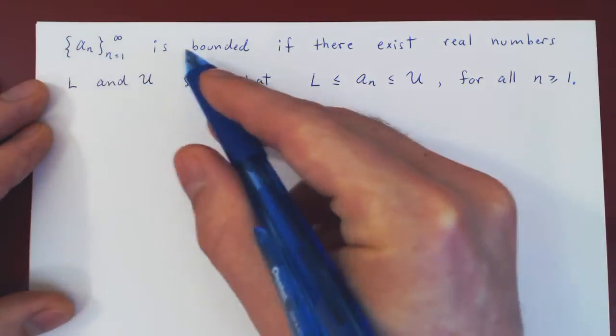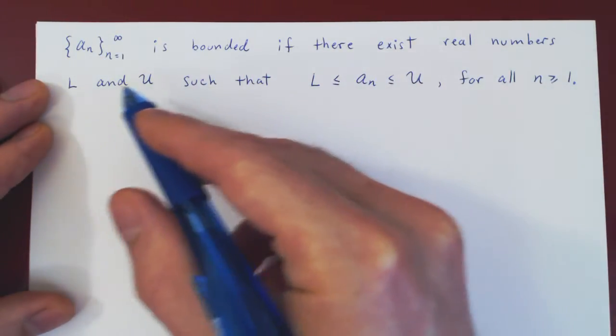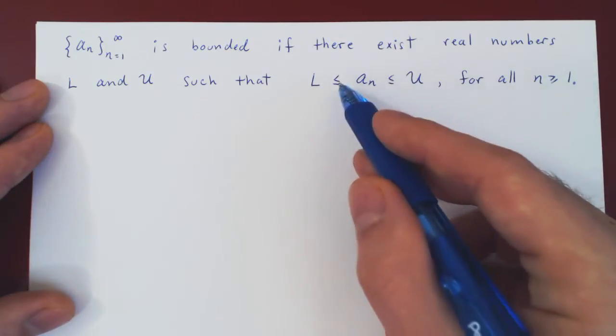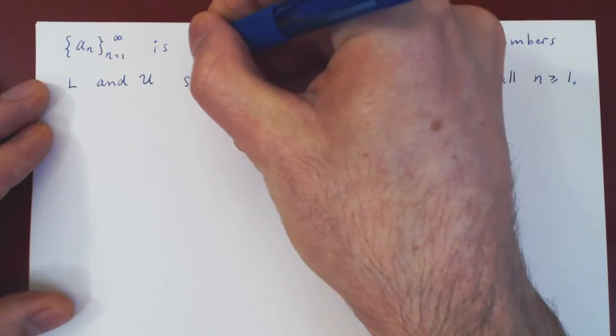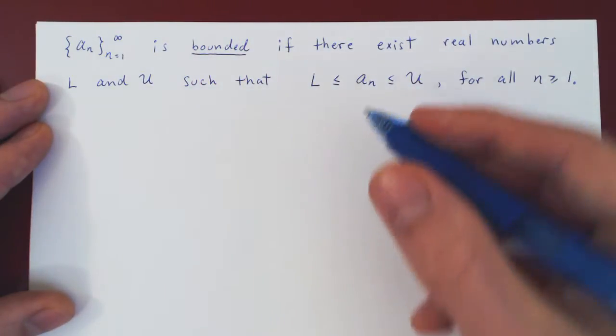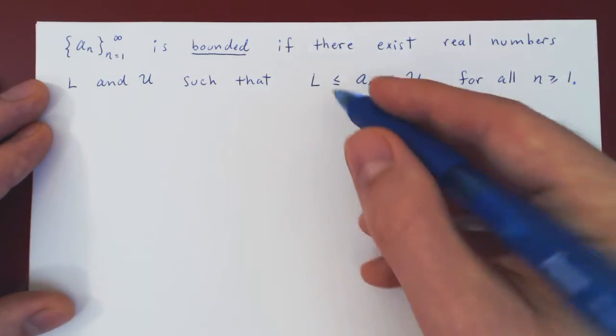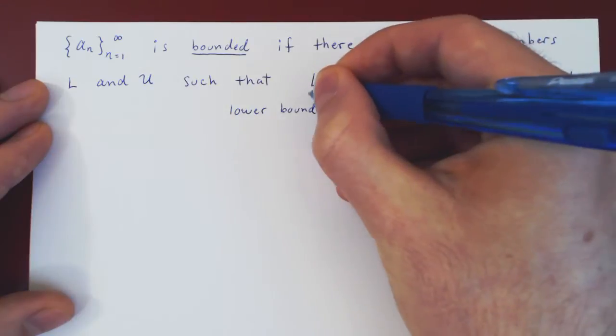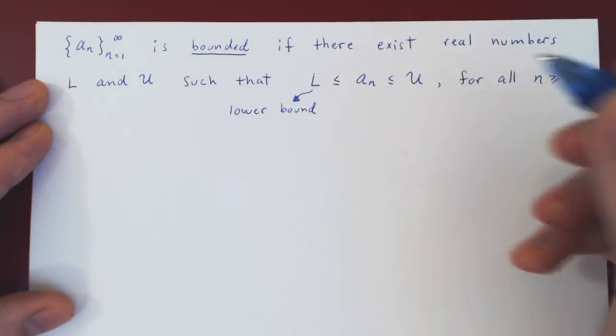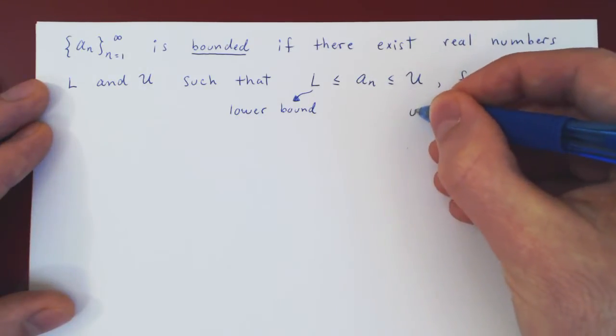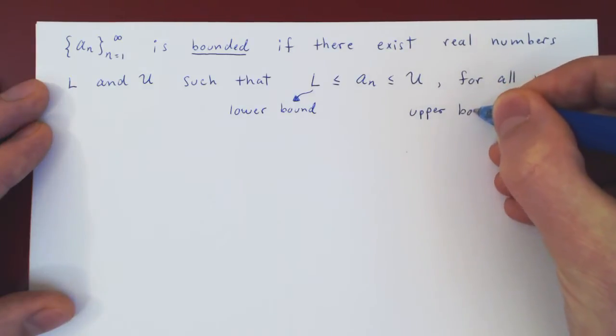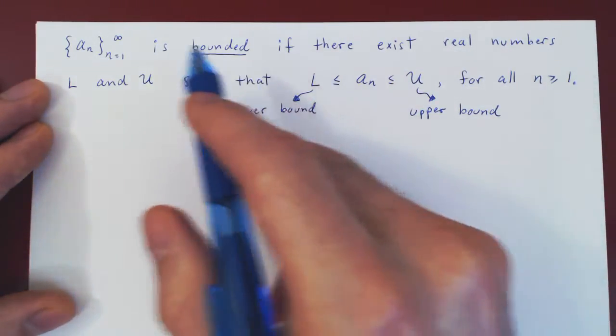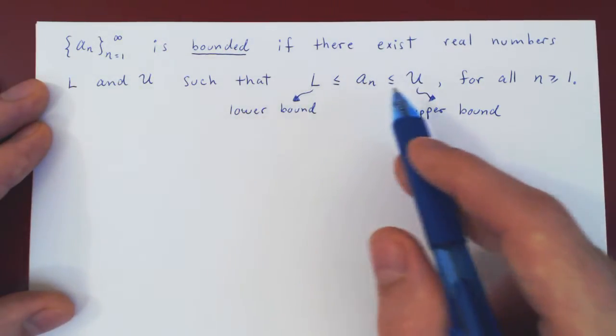Okay, so we say that a sequence a_n is bounded if there exist real numbers L and U such that every single term of the sequence, so a_n for every n, lies between L and U. Now we give L and U special names. L is called a lower bound, and you can probably guess that U will be called an upper bound. So it's a very intuitive definition. The sequence is bounded if it is always lying between two fixed real numbers.